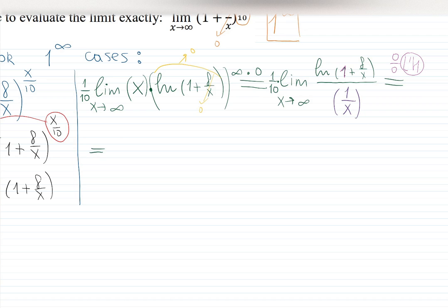L'Hôpital's rule tells me that now I can differentiate the top and the bottom and work with rates instead of the original functions. And you just hope that the rates are easier than the original function. Derivative of log of u is 1 over u. And my u in this case is everything here inside. So we'll have 1 over 1 plus 8 over x.